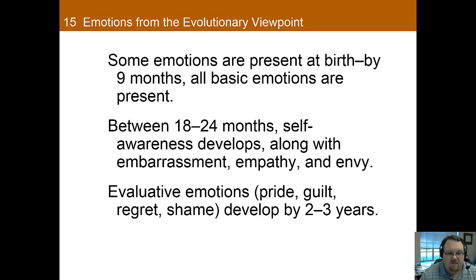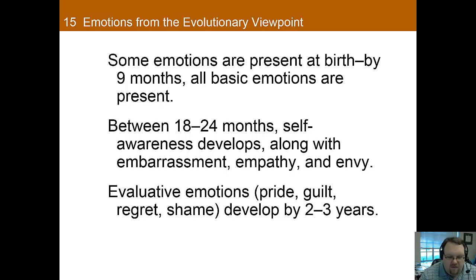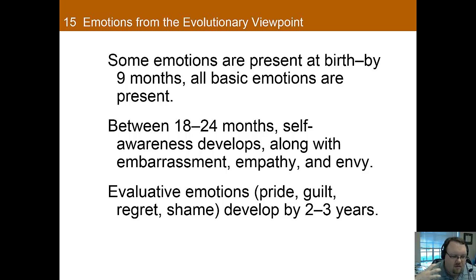Between four to six months, we start developing anger. At six months, we get the emotion of surprise, and between seven and eight months we start being able to experience fear. Around 18 to 24 months, we start getting self-awareness, which leads to embarrassment, empathy, and envy. Then, between years two and three, we start getting evaluative emotions where we evaluate ourselves in relation to others — emotions such as pride, guilt, regret, and shame. You can see that while some emotions are present at birth, they really develop as the child develops over the first two to three years of life.